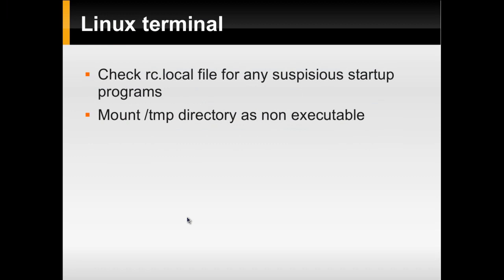The Linux terminal is not actually an auditing tool, but there are techniques to check whether our system is secure using it. One technique is to check the RC local file for any suspicious startup programs. Startup programs run automatically at boot and run in the background without giving any notifications. The RC local file is important because that is where records of startup programs are kept. If there is a virus or malicious program running, it will most probably have an entry in the RC local file to run on startup.